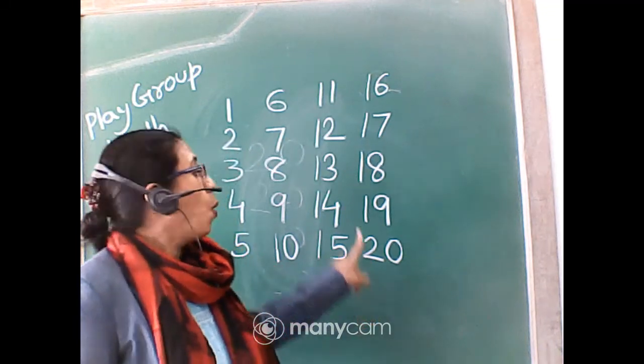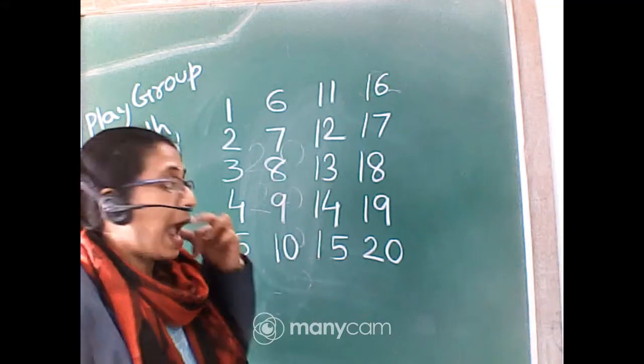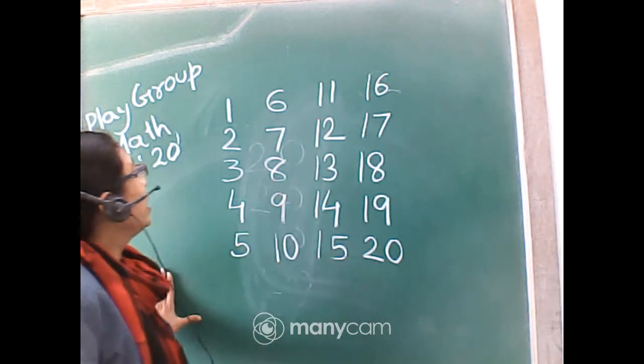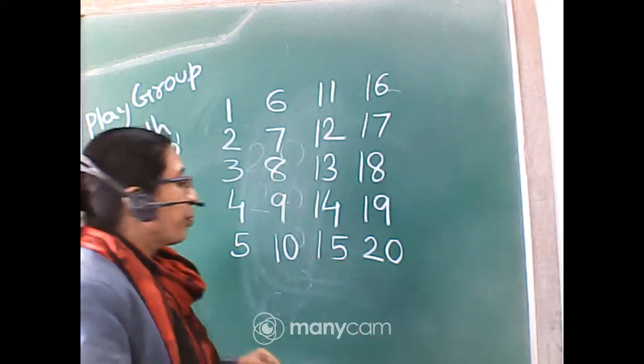So 20 is the just after number 1, 9, 19. 1, 9, 19. Then after 2, 0, 20. And you should learn in playgroup 1 to 20 writing.